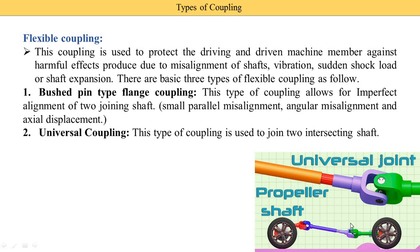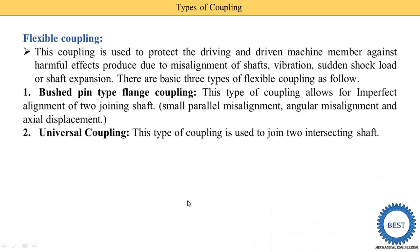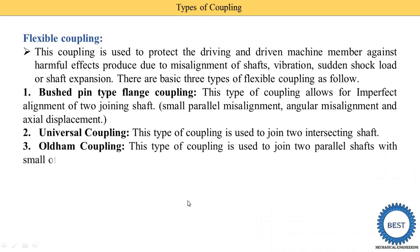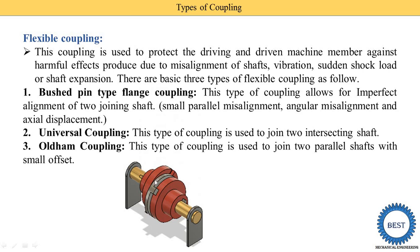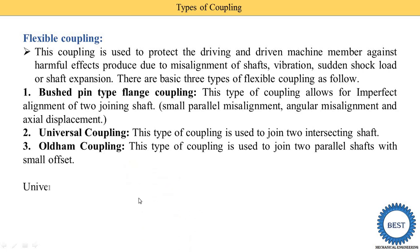The universal coupling is used to join two intersecting shafts whose axes are at a certain angle to each other. The third type is the Oldham coupling, which is used to join two parallel shafts with a small offset — for example, a 5 mm or 10 mm offset — where the center distance between the two shafts is not on the same line.